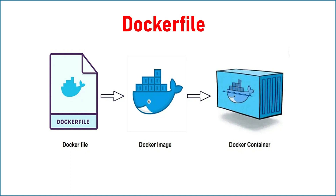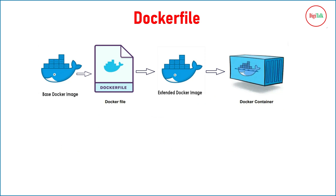With the use of a Dockerfile you can create your Docker image, and from the Docker image you can run your containers. I've extended this diagram with more details: base Docker image → Dockerfile → extended Docker image → Docker container. So first we have a base Docker image, then we apply customizations with the help of a Dockerfile, create our extended image, and from that we run our Docker container.